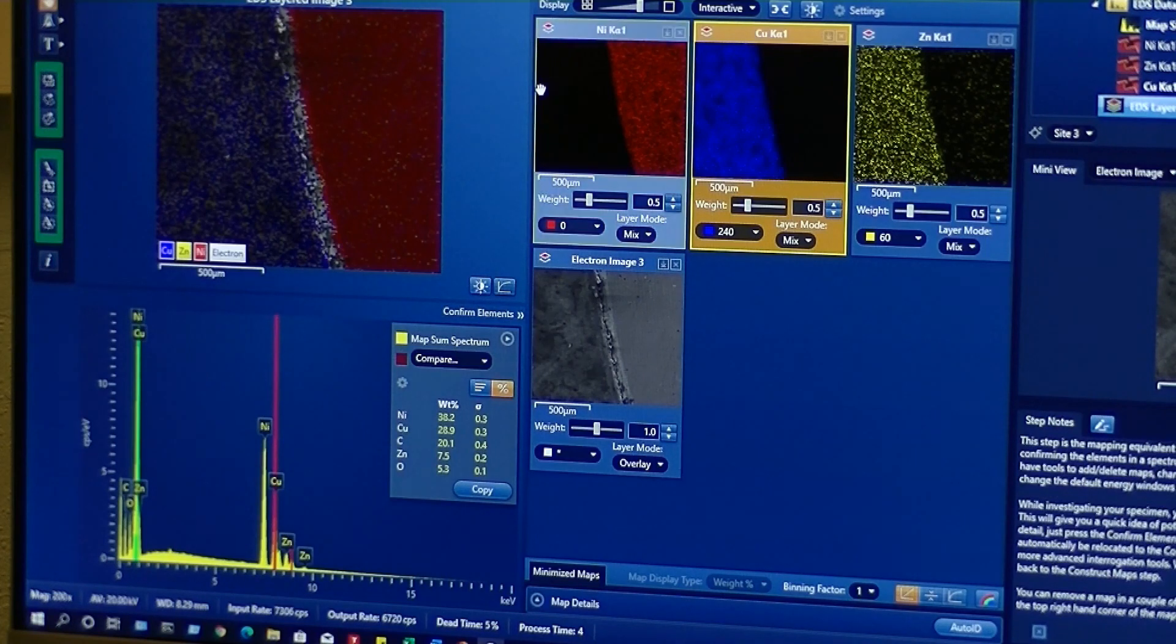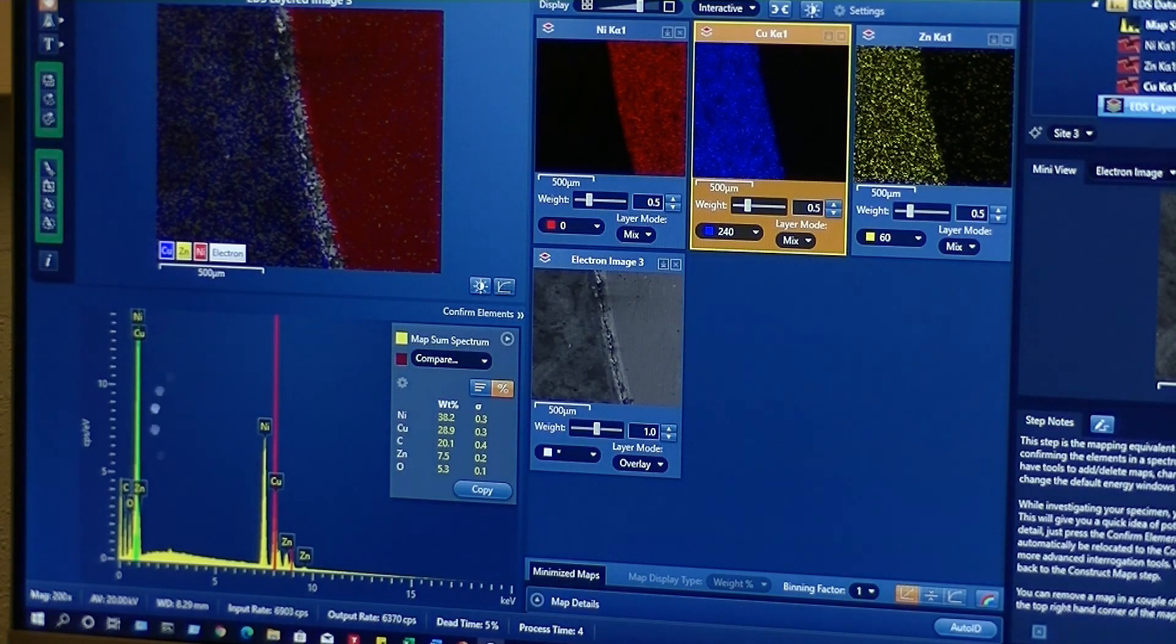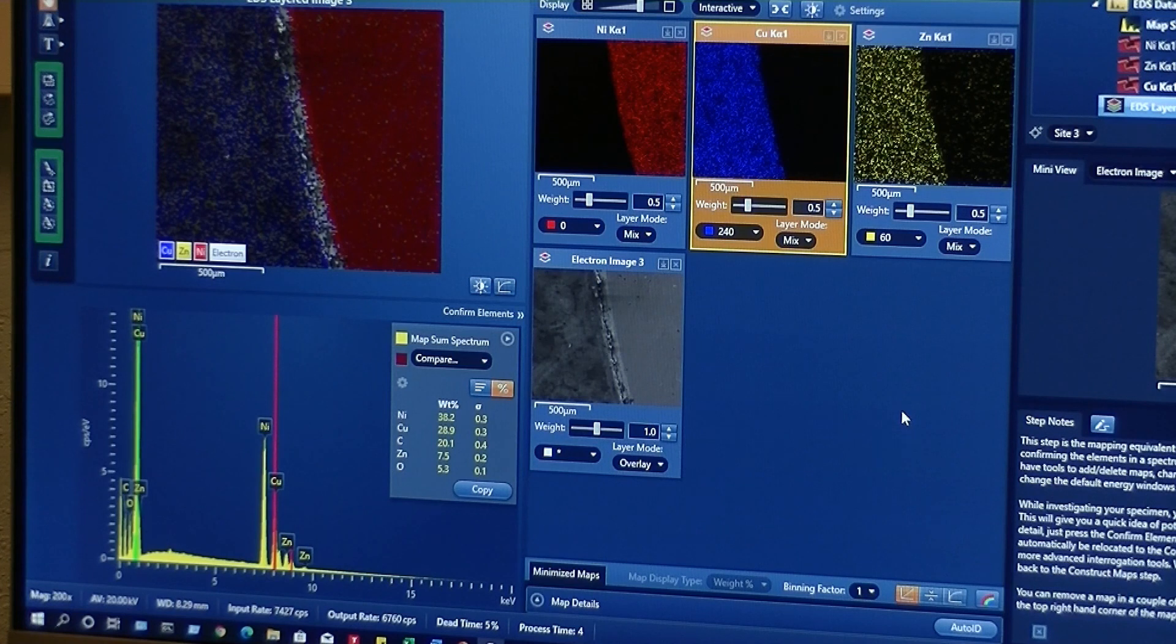Now we can see all of the maps separately here, a combination here and a little spectrum below. That really clearly shows the difference between those two sections, the inner and outer part of the pound coin. And that's really useful for us when it's not so obvious just by looking at our sample with our eyes that there are different elements in different places.